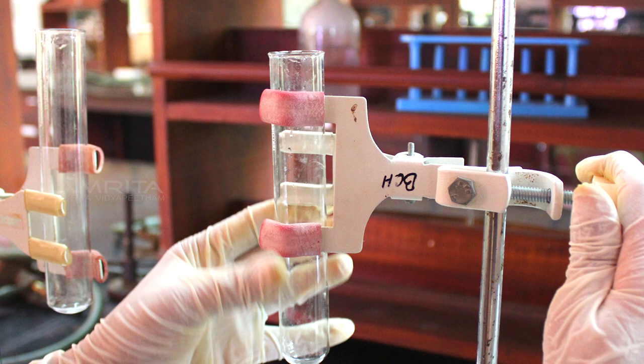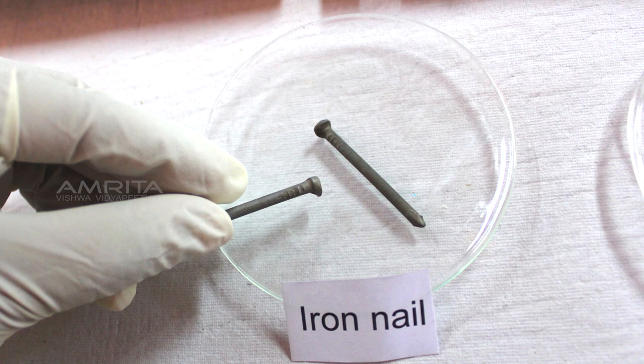Procedure: Take two stands with clamps and fix one boiling tube in each stand. Pick one of the iron nails from the watch glass, tie it with a piece of thread and hang it in one of the boiling tubes.